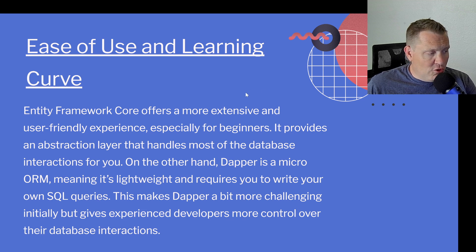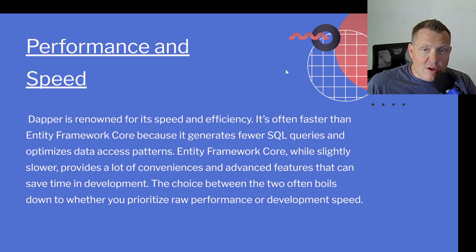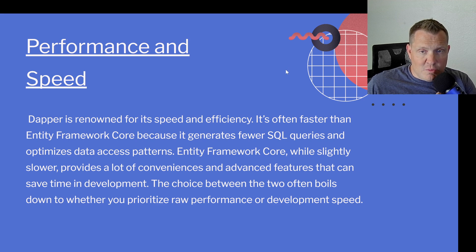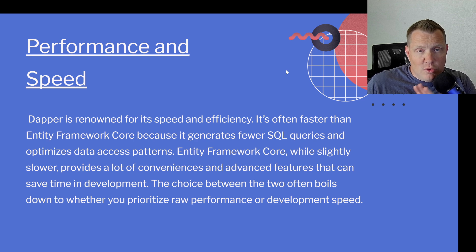Now as far as performance and speed, Dapper is renowned for its speed and efficiency. It's often faster than Entity Framework Core because it generates fewer SQL queries and optimizes the data access patterns. Entity Framework Core, while slightly slower, provides a lot of conveniences and advanced features that can save time in development. The choice between the two often boils down to whether you prioritize raw performance or development speed.